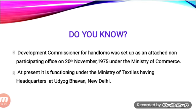If sugarcane is not crushed within 24 hours, the sucrose content will get reduced. At present, sugar is the largest industry next to the cotton textile industry in India, and India stands second in the world next to Brazil. It provides employment to 2.86 lakh people. Uttar Pradesh is the largest producer of sugar, producing about 50% of the country's total. Other producing states are Maharashtra, Karnataka, Andhra Pradesh, Tamil Nadu, Bihar, Punjab, Gujarat, Haryana, and Madhya Pradesh.